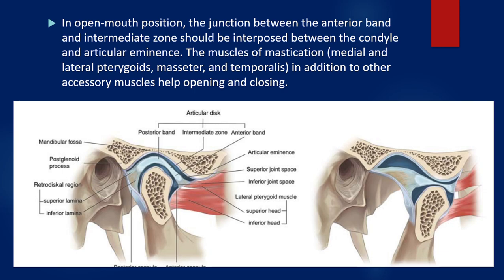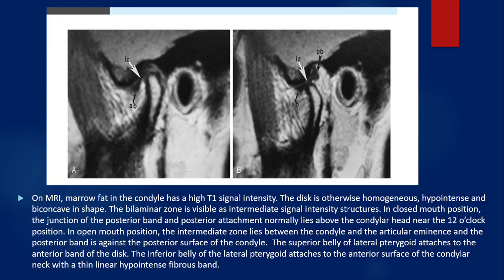If normal positioning is not present, as seen in the picture on the right, there is disruption of the joint with displacement and dislocation. On MRI, the marrow fat in the condyle has a T1 high signal. The disc is otherwise homogeneously hypointense and biconcave. The bilamellar zone is visible as an intermediate signal zone. In a closed mouth position, the junction of the posterior band and posterior attachment lies above the condyle at approximately the 12 o'clock position. In an open mouth position, it lies between the condyle and the articular eminence, with the posterior band against the posterior surface of the condyle. The superior belly of the lateral pterygoid attaches to the anterior band of the disc, while the inferior belly attaches to the anterior surface of the condyle neck via a thin linear hypointense fibrous band.